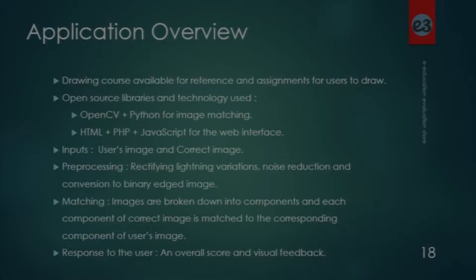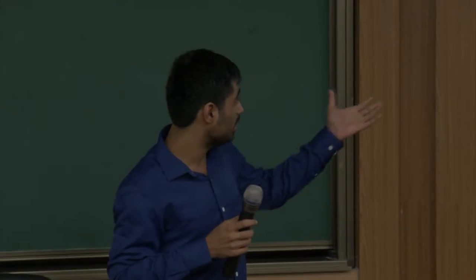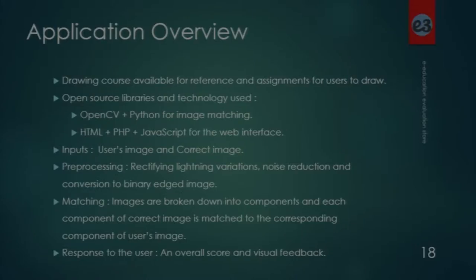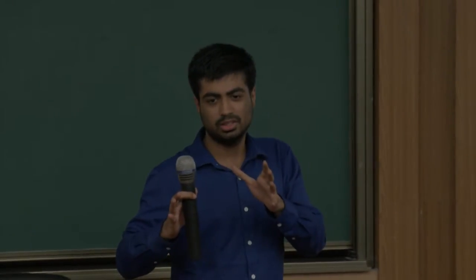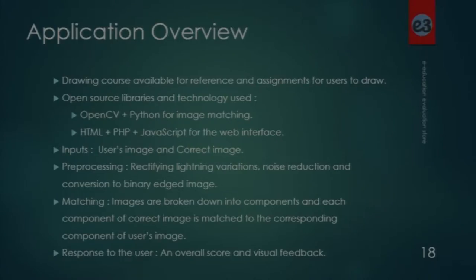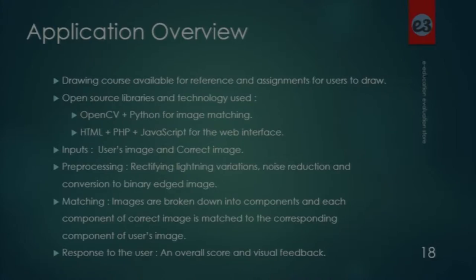The inputs to my application are the user's image and the correct image. For pre-processing I am rectifying the lighting variations, as the user may click it with their own camera so the lighting might vary. For noise reduction I am converting it into a binary edge image, and I am also taking care of the size and position of the image. For matching I am breaking down the image into small individual components and comparing the components of the correct image with the corresponding components of the user's image.